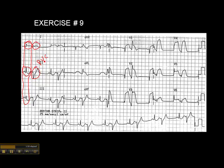We can eliminate the PVCs from our ECG interpretation. Going through the leads sequentially: in lead 2, is there ST elevation? No — if anything, the ST segments are sagging. In lead 3, there's no ST elevation; in fact, it's sagging. And in AVF, there is no ST elevation — the ST segment is sagging.